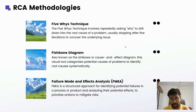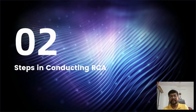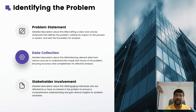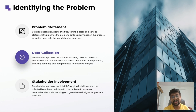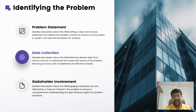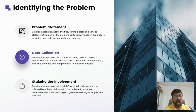Now, steps in conducting RCA. The first step is the problem statement — a clear and concise statement describing exactly what the problem is and what impact it has caused. For example, if the server was down, the problem statement should clearly state which server was down, what actions were taken by stakeholders, and how long the application was also down — let's say 30 minutes.